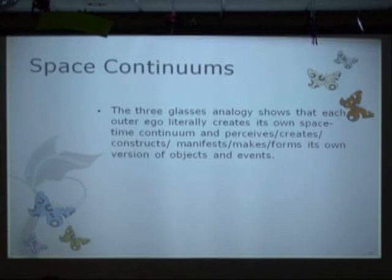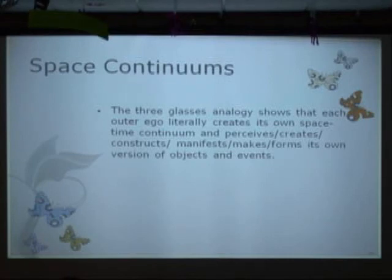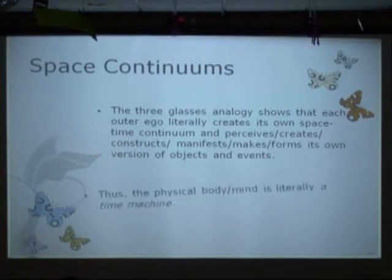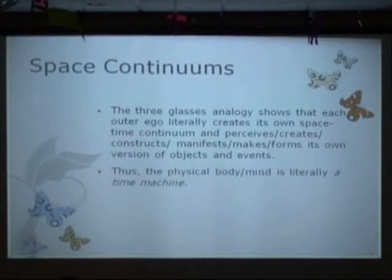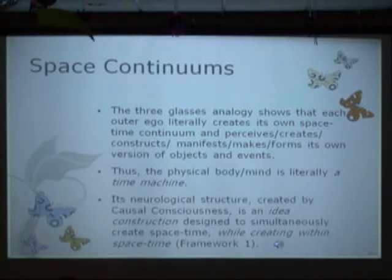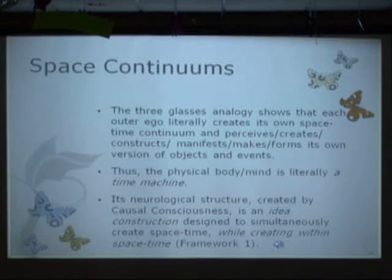So the three glasses analogy shows that each outer ego constructs its own space-time continuum. And I just put these words up there — these verbs: perceives, creates, constructs, manifests, makes, forms — these are all words that you do find in the Seth material. So just in this context then, we're a time machine in a sense. The body-mind is a time machine — a neurological structure created by causal consciousness, designed to simultaneously create space-time and also create within space-time.